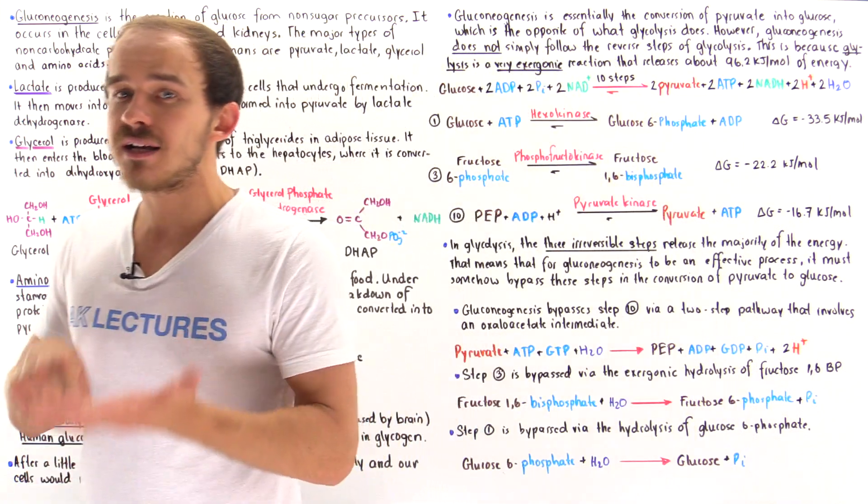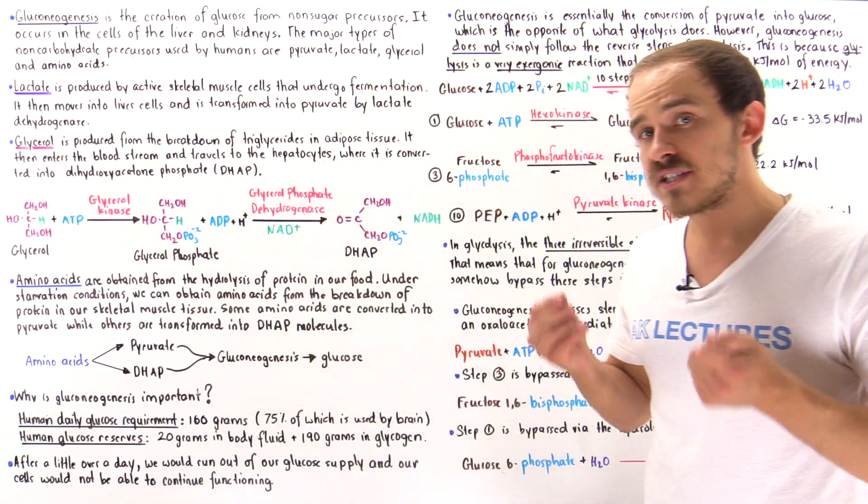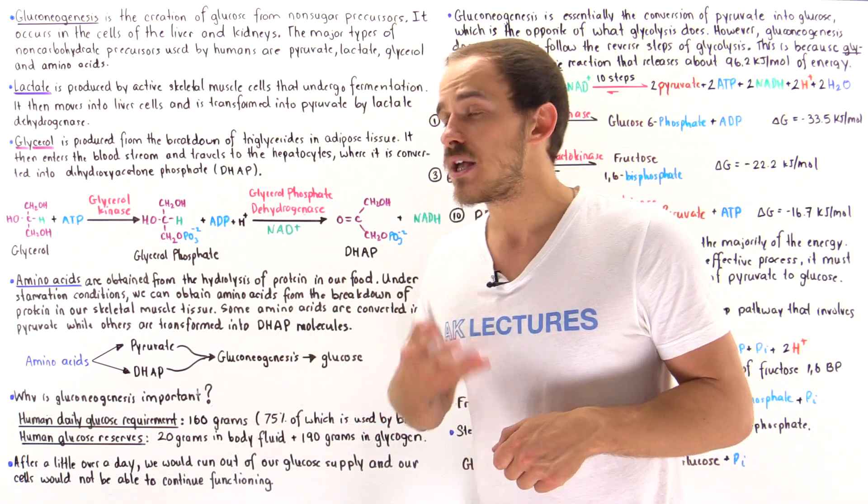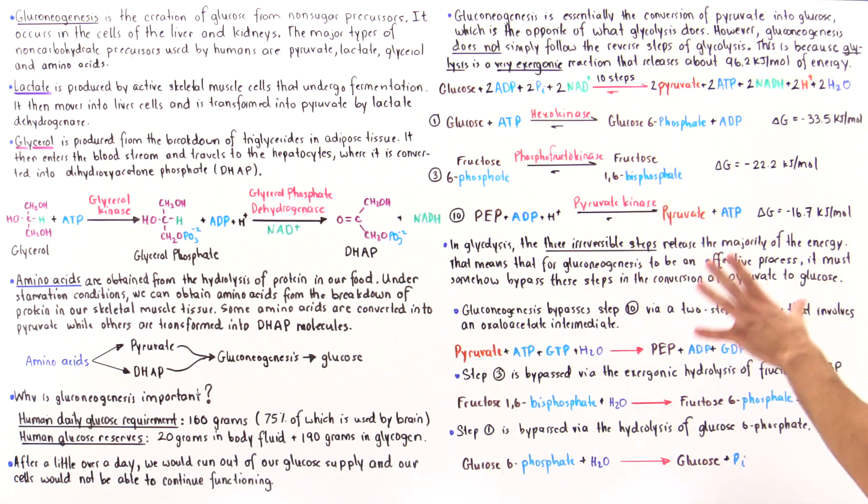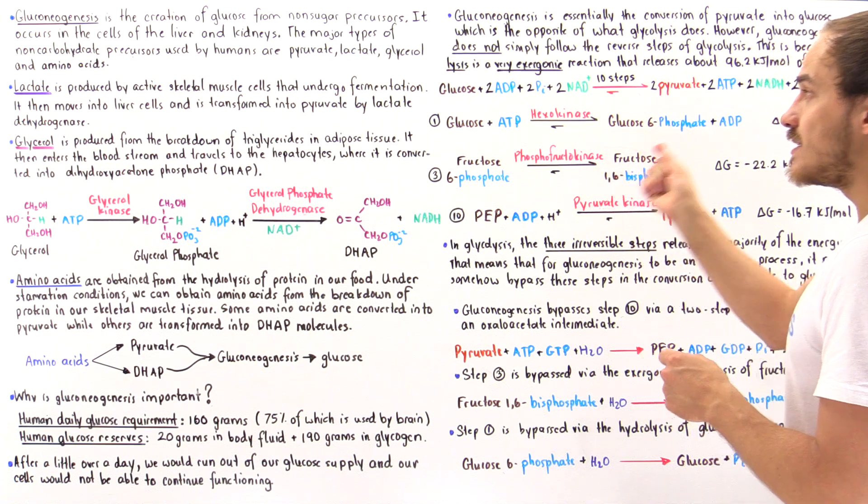Although there are steps that are exactly the same. So in fact, there are seven steps that are the same; the other steps are not the same. And the reasoning is because gluconeogenesis, if it simply followed the reverse steps of glycolysis...